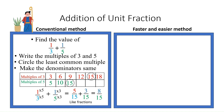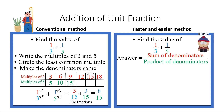Now the same question we can do in seconds. Take the same question: 1/3 plus 1/5. The shortcut answer is sum of denominators upon product of denominators. So the answer is 3 plus 5 upon 3 times 5, which gives you 8/15.